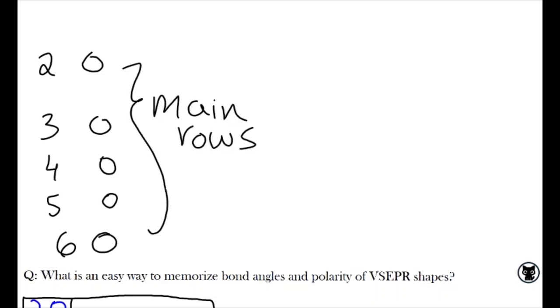These will be our main rows, with the left side representing the number of bonding pairs, and the right side the number of lone pairs.